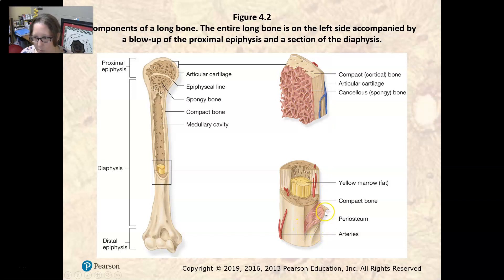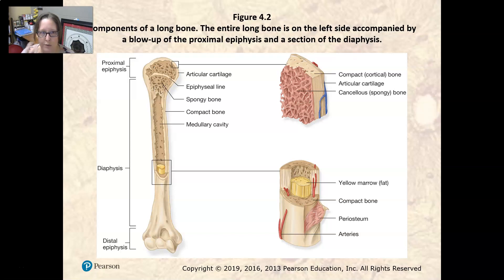The periosteum is illustrated here — it is the covering of the bone and is quite important. For example, if you have a fracture or damage to your bone, the periosteum generates the beginning of healing: the creation of new bone, elimination of what's been destroyed, and laying down new bone to fix the break.